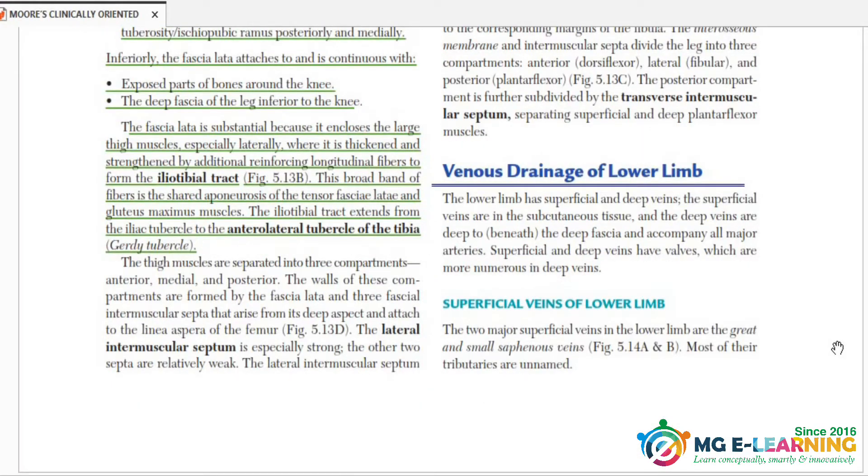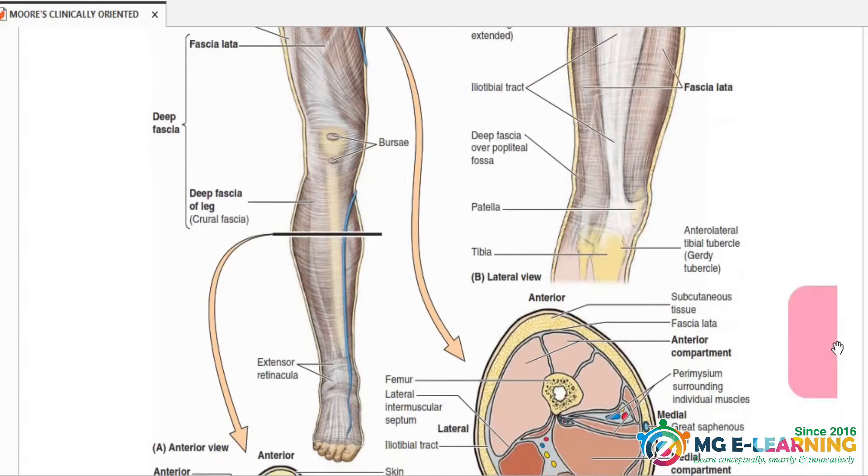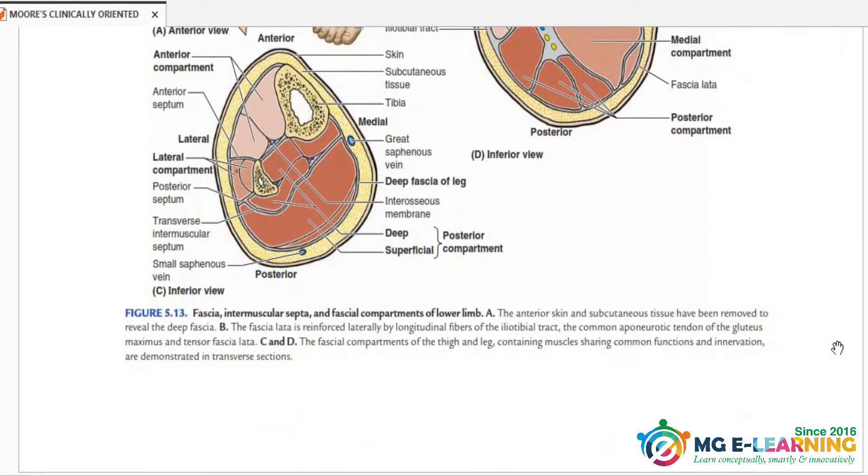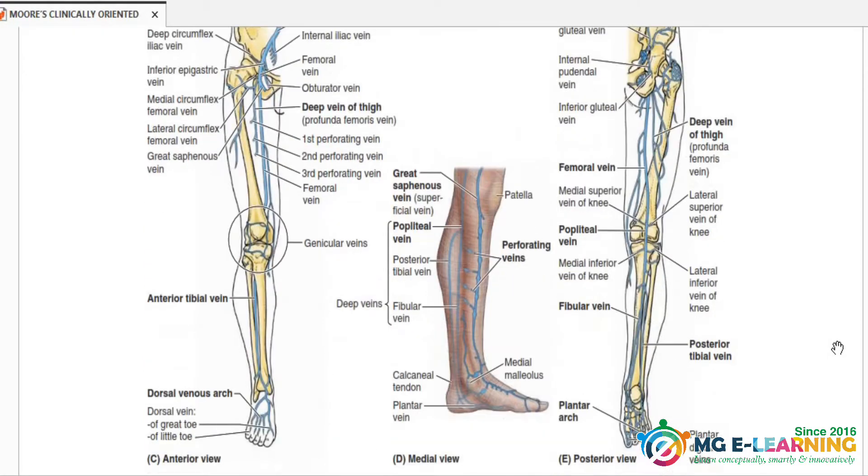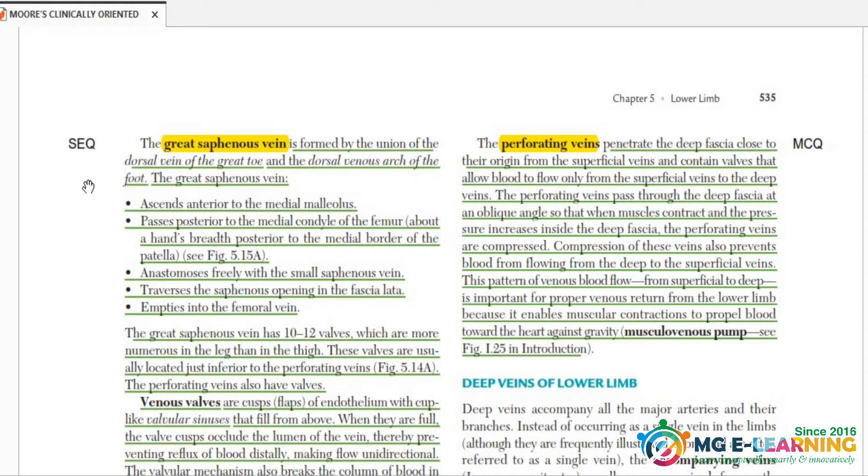Veins of lower limb - it is not very much important, but a few veins are important. And this great saphenous vein, it is important for SQ point of view. You have to know its origin, course, and distribution.